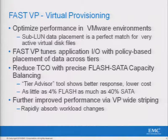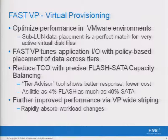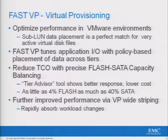Policies define how much of a given resource to assign — good, better, best. Surprisingly, when you deploy flash drives in conjunction with FAST it actually drives the cost down. With as little as 5% flash and 40% SATA replacing Fibre Channel, this auto-tiering technology is cheaper. The disk itself is cheaper.